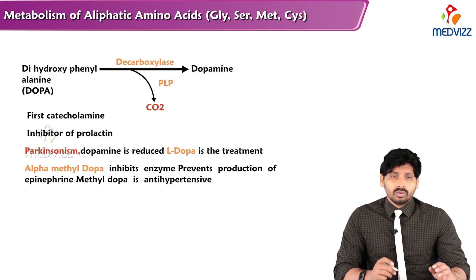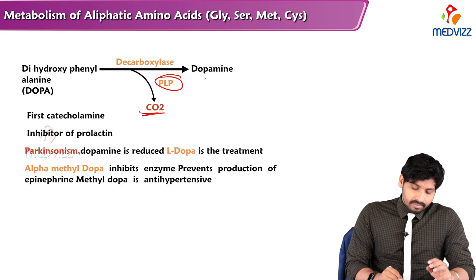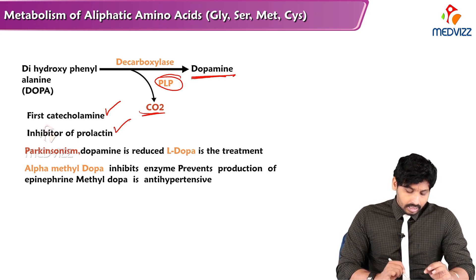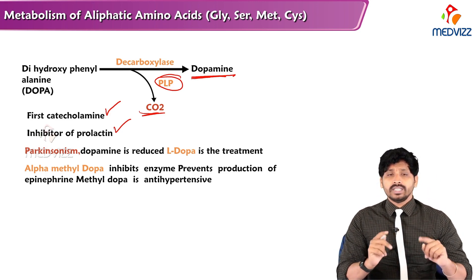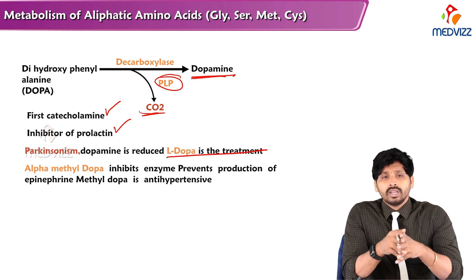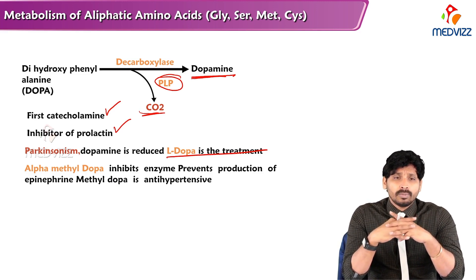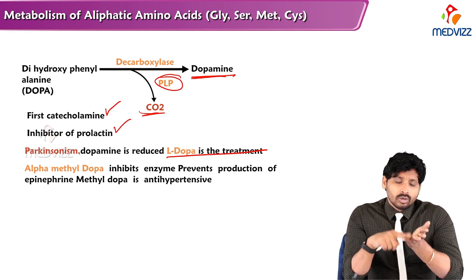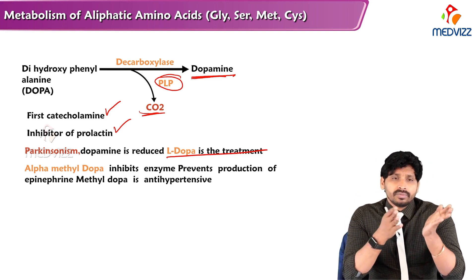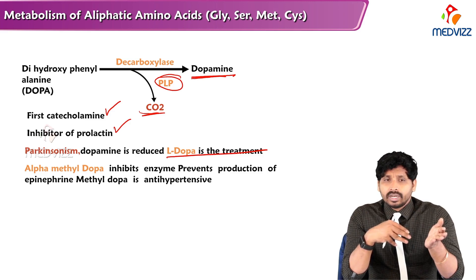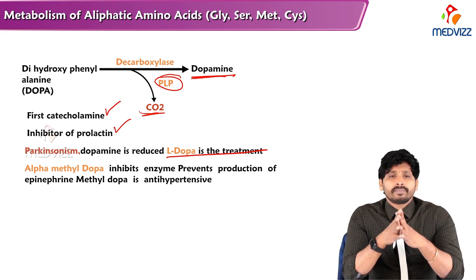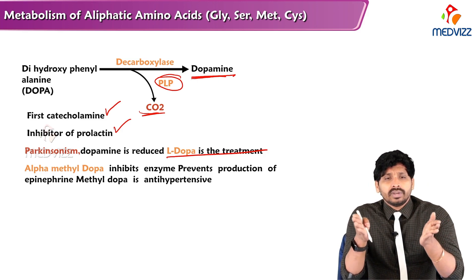Dopamine is the first catecholamine formed. Its functions include inhibition of prolactin. In Parkinsonism, dopamine is reduced. L-DOPA is used as treatment because dopamine itself cannot cross the blood-brain barrier, but L-DOPA can. Once inside the brain, L-DOPA is converted to dopamine, and subsequently to epinephrine and norepinephrine. Alpha-methyldopa inhibits the enzyme that produces epinephrine and is used as an antihypertensive agent.